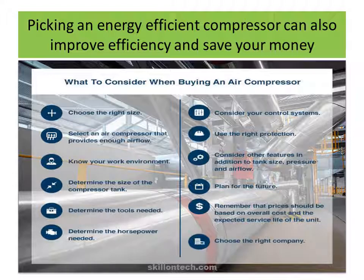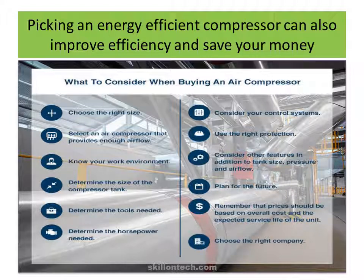The sixth step to make your system efficient: picking energy-efficient compressors can also improve efficiency and save money. What to consider when buying an air compressor — choose the right size; select a compressor that provides enough air flow; know your work environment; determine the size of the compressor tank; determine the tools needed; determine the horsepower needed; consider your control system; use the right protections; consider other features in addition to tank size, pressure, and air flow; and plan for the future. Remember that prices should be based on overall cost and expected service life of the unit. Choose the right company.